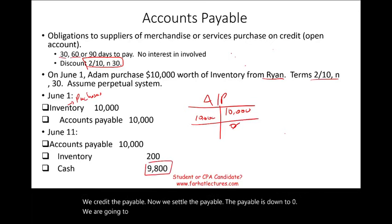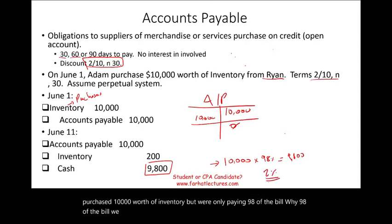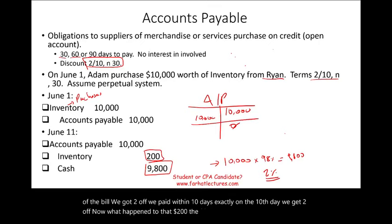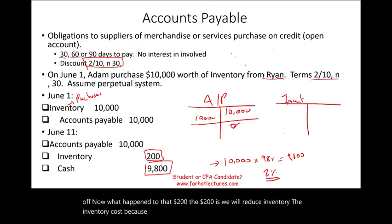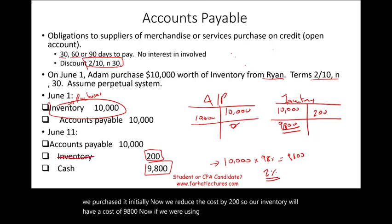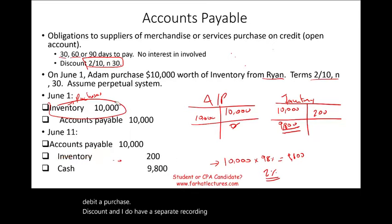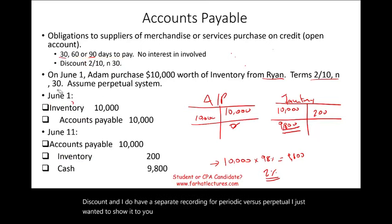Adam pays only $9,800 — 98% of the bill — because he paid within 10 days and received the 2% discount. The $200 difference is used to reduce the inventory cost under the perpetual system, bringing the inventory carrying value down to $9,800. Under a periodic system, you would instead debit a purchase discounts account. This is one of the most common current liabilities — all companies buy on account.